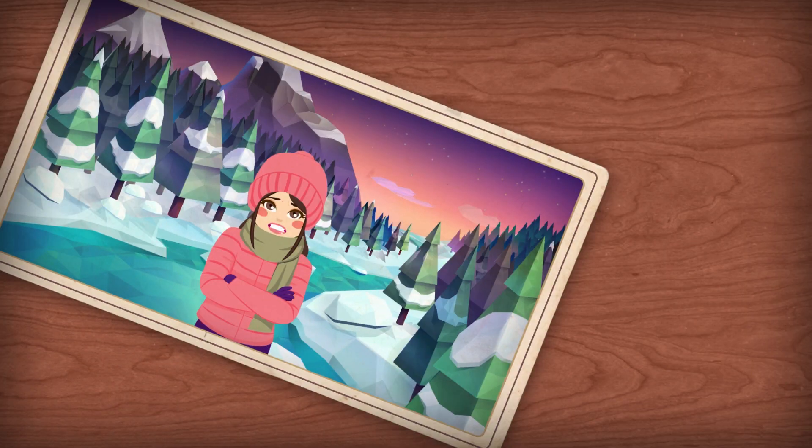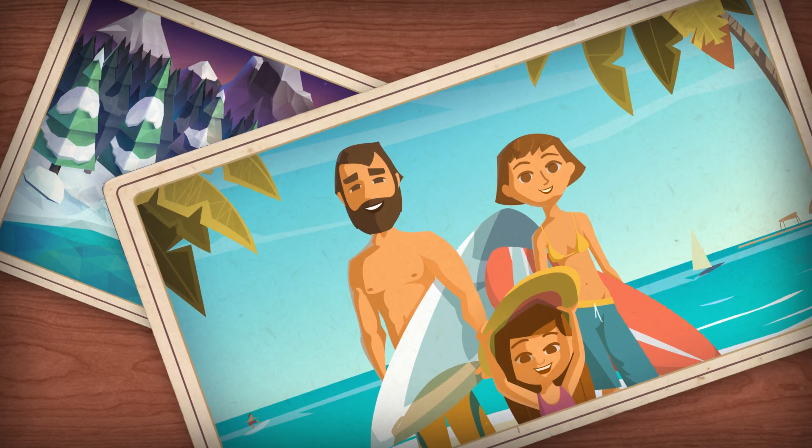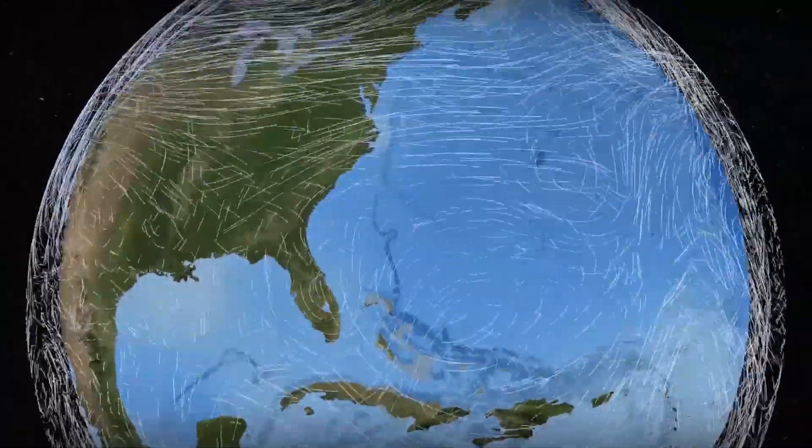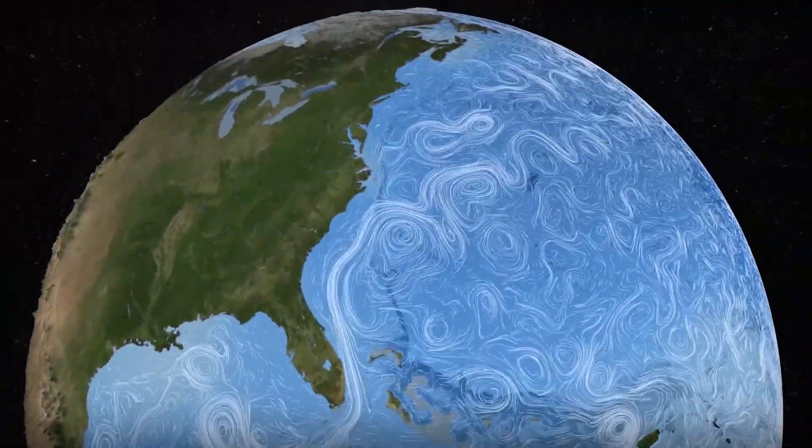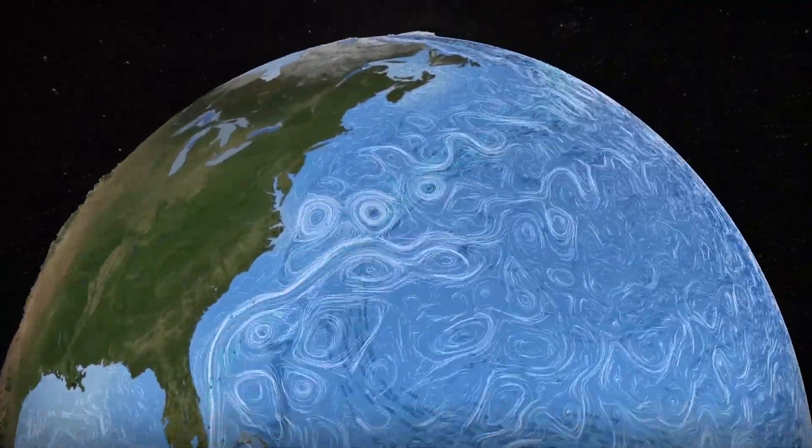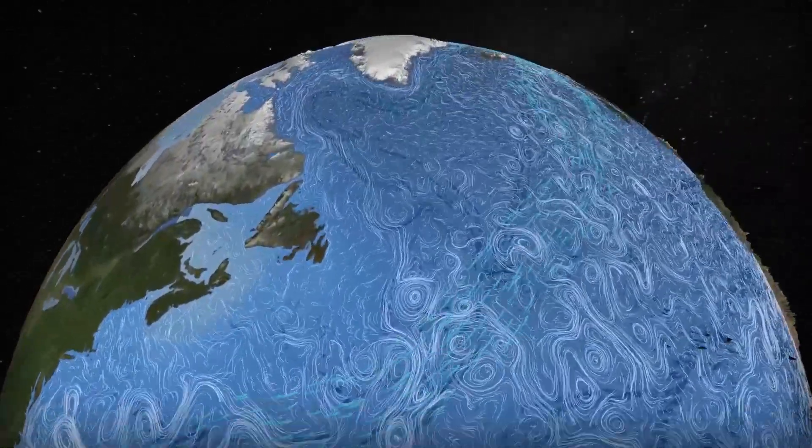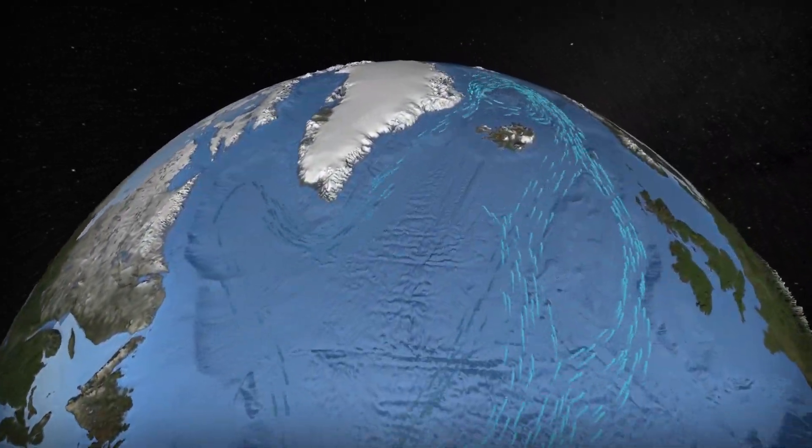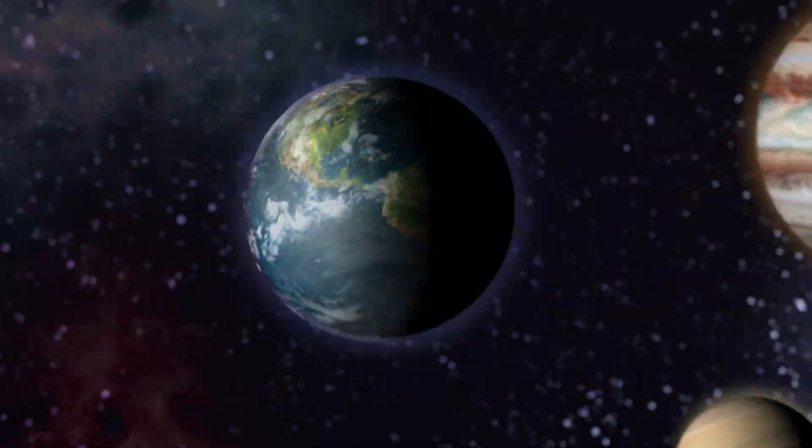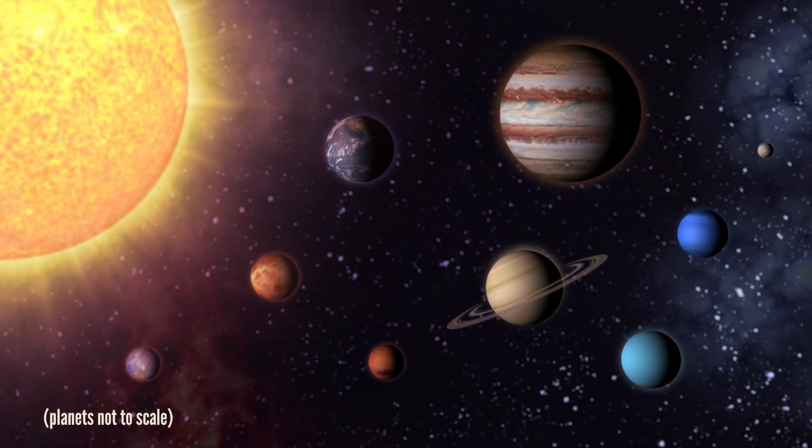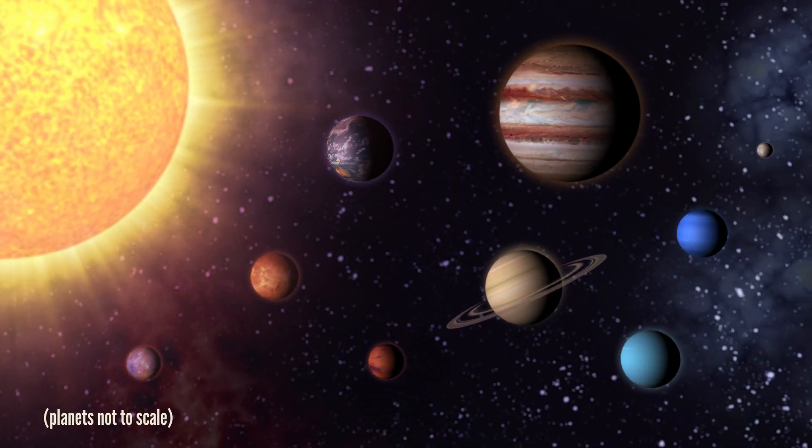Those changing seasons make us change our wardrobe and keep an eye on the weather forecast, but they also keep our planet fresh. Our yearly temperature cycles power air and water currents that pump nutrients from deep oceans, drive winds, transport water, and a million other things. But do seasons on other planets work like they do here?